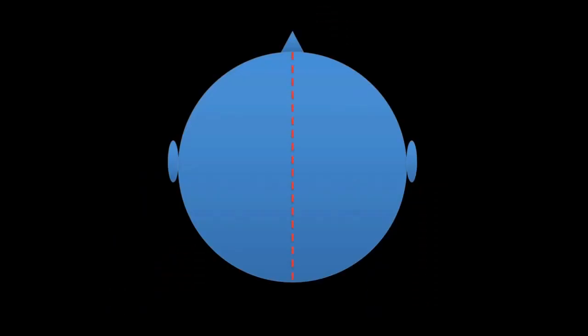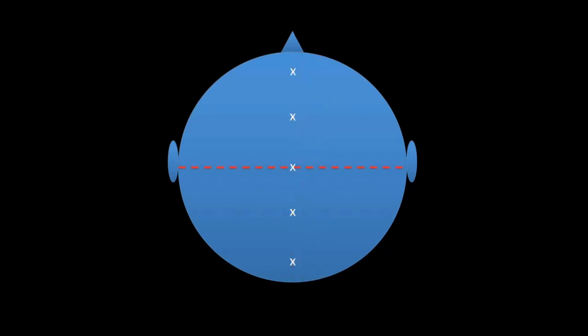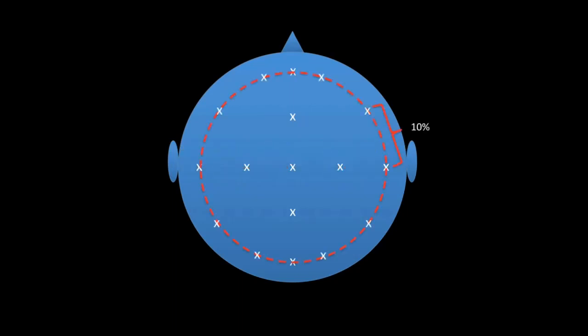Consider a diagram of a head looking from the top down. The first measurement is made from the nasion to the inion, front to back. This measurement is divided into 10 and 20 percent increments — which is how the 10-20 System gets its name. Marks are placed, and then a measurement is made from one preauricular point to the other, also divided into 10 and 20 percent increments. Further marks are made around the circumference of the head, separated by 10 percent increments, and parasagittal measurements are made, separated by 25 percent increments.